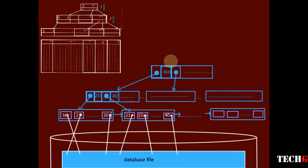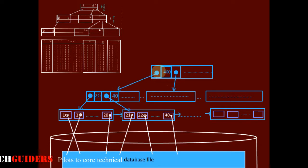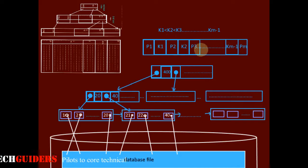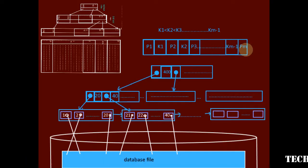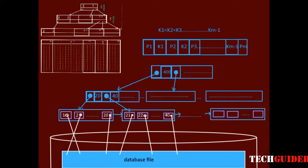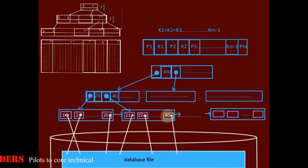Finally, there is a single root node. The root node structure is exactly similar to that of the internal node: a pointer, then a key which is the maximum from the left subtree, then pointer and so on, with a pointer at the end. All keys are sorted. If m is the order of the B-plus-tree, the root node can also have a maximum of m pointers and m-1 keys. The order of the root node and internal node is the same, but it may differ from that of the leaf node.